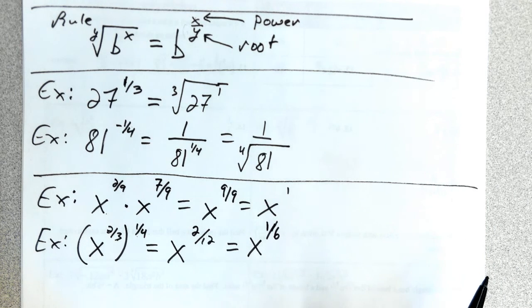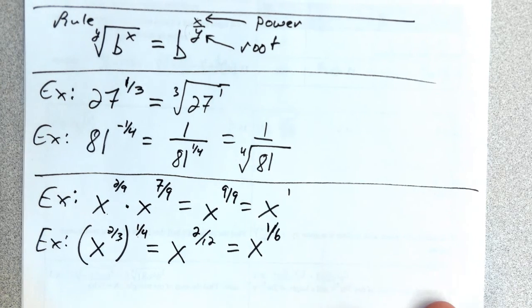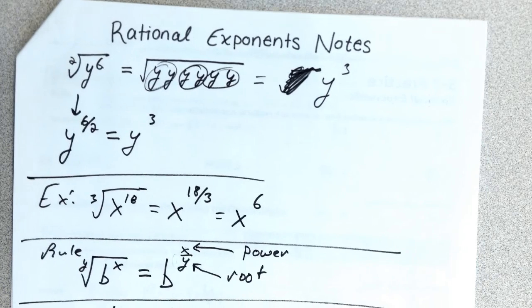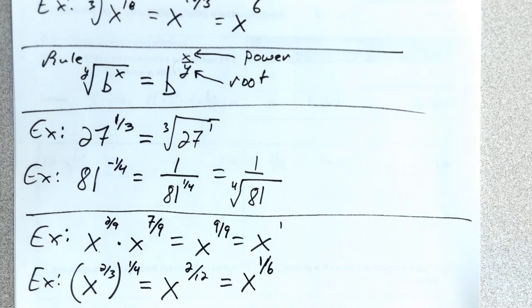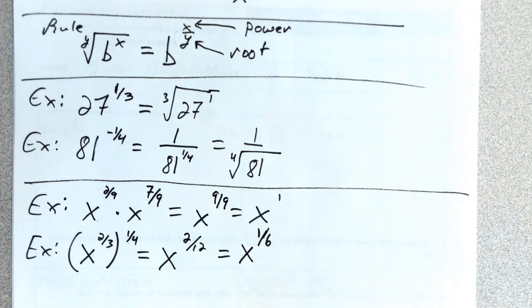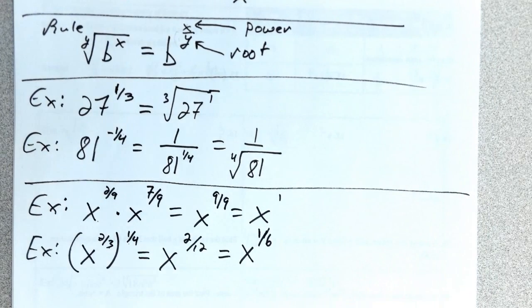Once you've turned it into a rational exponent, you can apply all the same exponent properties we've learned previously. It's about translating between the two forms and applying the properties when useful or appropriate. That's everything for rational exponents.